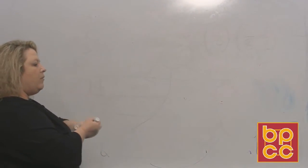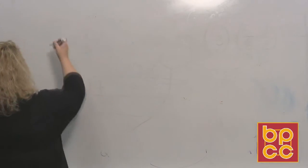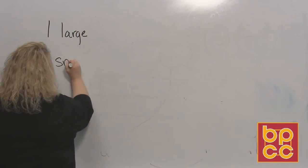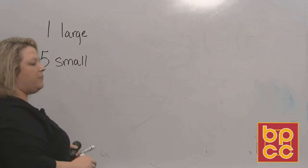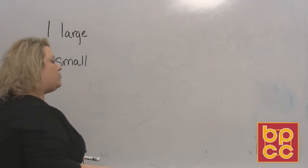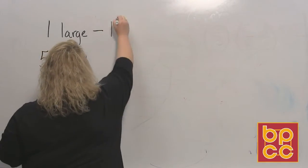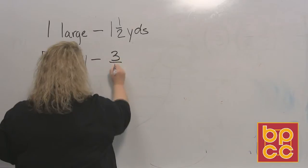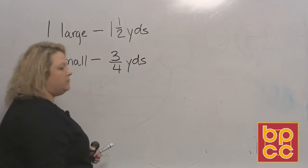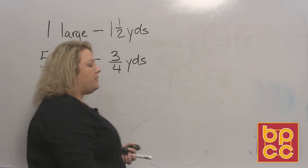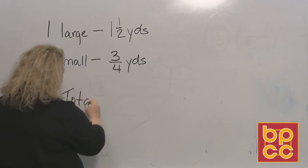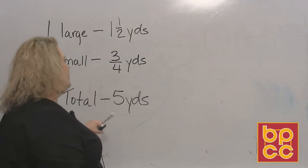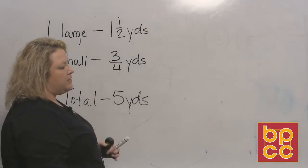Let's write down the information that we know. He needs one large shirt and five small shirts. The large shirt requires one and one-half yards of material. The small shirt needs three-fourths yards of material. He has a total of five yards right now. We want to know if he has enough to make all of these shirts.